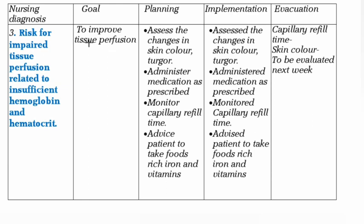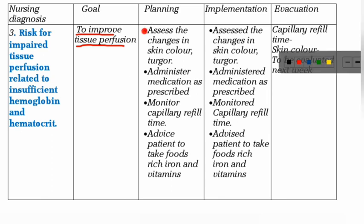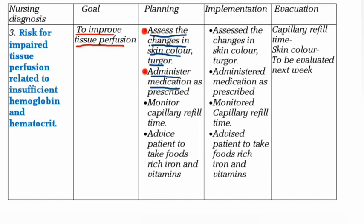Nursing Diagnosis 3: Risk for impaired tissue perfusion related to insufficient hemoglobin and hematocrit. Goal: To improve tissue perfusion. Planning: Assess changes in skin color and turgor, administer medication as prescribed, monitor capillary refill time, advise patient to take foods rich in iron and vitamins. Implementation: assessed changes in skin color and turgor, administered medication as prescribed, monitored capillary refill time, advised patient to take foods rich in iron and vitamins. Evaluation: capillary refill time and skin color to be evaluated.